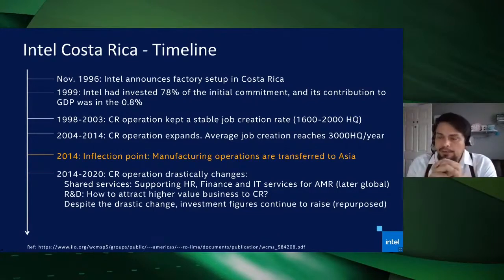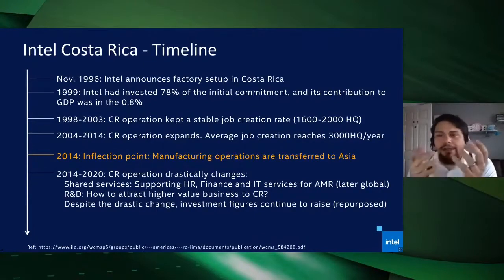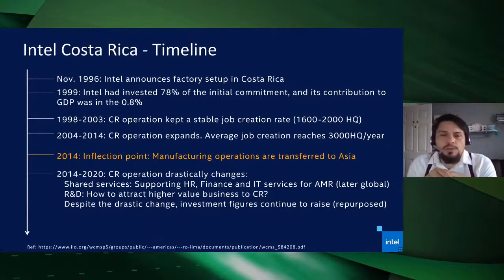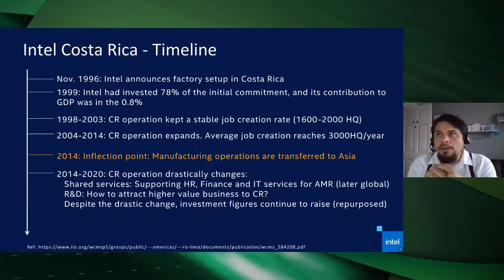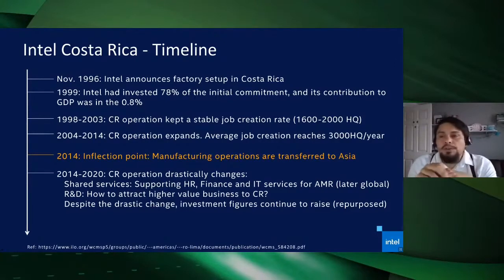In 2014, Intel made the decision that manufacturing operations would no longer be sustained in Costa Rica and would be transferred to Asia — somewhat contradictory to the origins of the operation. This decision had a deep impact: some business operations had to be shut down, affecting a workforce that was predominantly technicians — defined in Costa Rica as high school graduates with some specialization but without a full engineering or college formation.